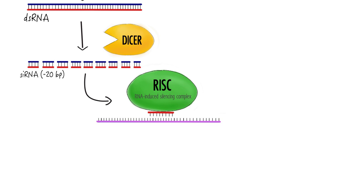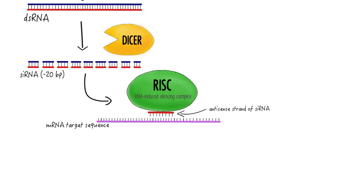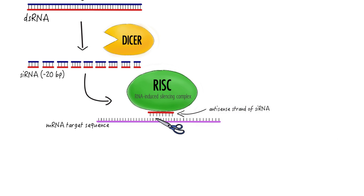This strand guides RISC to the complementary mRNA sequence that has exited the nucleus but has not yet been translated into protein. Once the antisense strand binds onto the mRNA sequence along with RISC, an enzyme in RISC cuts the mRNA strand, which is degraded and can no longer be made into protein.